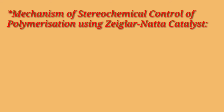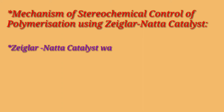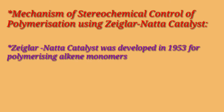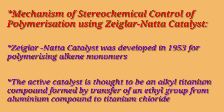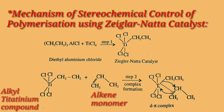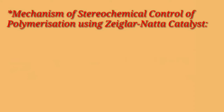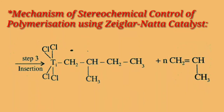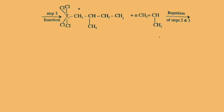Next is the mechanism of stereochemical control of polymerization using Ziegler-Natta catalyst. Ziegler-Natta catalyst was developed in the year 1953 for polymerizing alkene monomers. The active catalyst is thought to be an alkyl-titanium compound formed by transfer of an ethyl group from an aluminium compound to titanium chloride. The alkene monomer coordinates with the alkyl-titanium compound to form a d-π complex, and then inserts into the titanium-carbon bond to form a new carbon-carbon bond. Further, the same steps are repeated to give the addition compound.